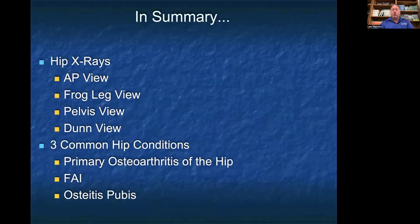In summary, we talked about common views of the hip x-rays: the AP view, the frog leg view, the pelvis view, and the Dunn view, which is specifically used to further evaluate FAI. We also talked about three common hip conditions: primary osteoarthritis of the hip, FAI — femoral acetabular impingement — with its three types of cam deformity, pincer type deformity, and combined or mixed, and osteitis pubis. Thank you so much.